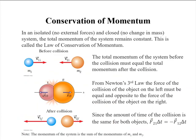Now you've heard of conservation of energy. We also have conservation of momentum in an isolated and closed system. It's isolated because we have no external forces, and it's closed because there's no change in mass in the system. The total momentum of the system remains constant. This is called the law of conservation of momentum. Basically, what it means is the total momentum before something happens — say a collision — and the total momentum after have to be equal. It has to remain constant.